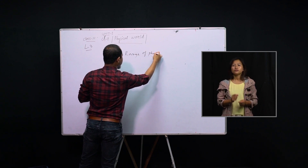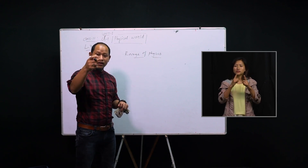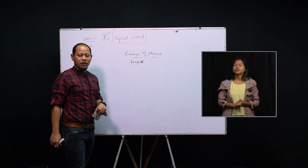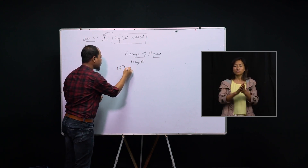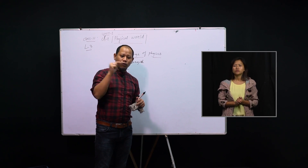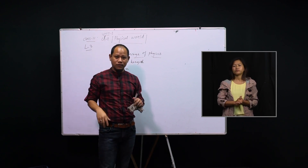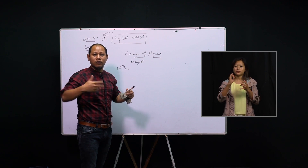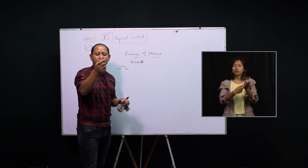The range of physics — I'm just naming the topic so that you can understand. If I explain the range of physics in terms of length: by using the principles of physics we can measure a very, very small length of around 10 to the power minus 14 meters. Just imagine how small that is — it's like 1 divided by 10¹⁴, which is 0.000... very, very small. We cannot visualize it with our naked eyes, yet we can measure it using the laws of physics.